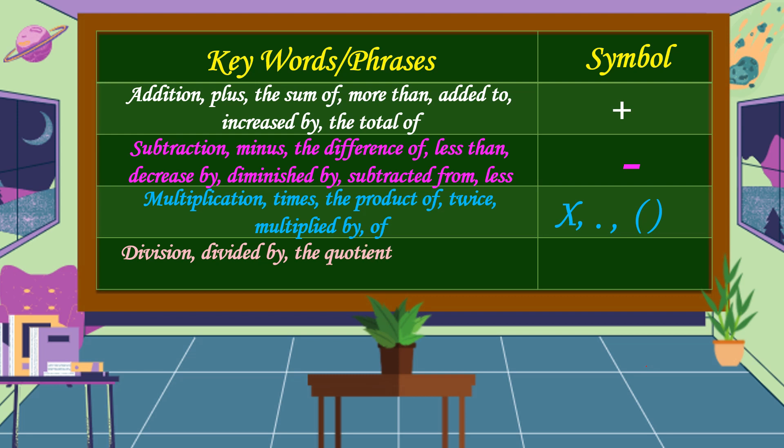Division: divided by, the quotient of, the ratio of. We have two symbols: the division sign and bar.